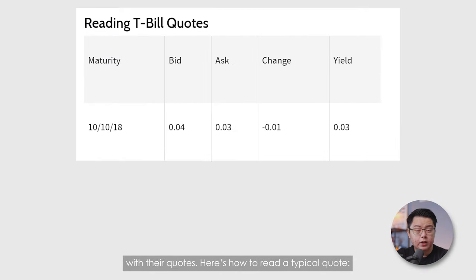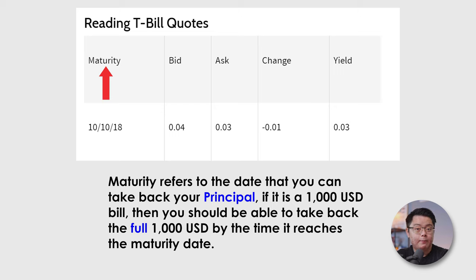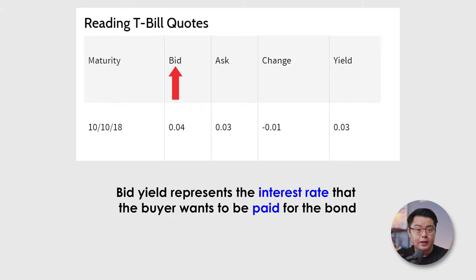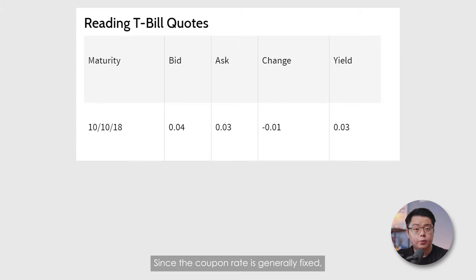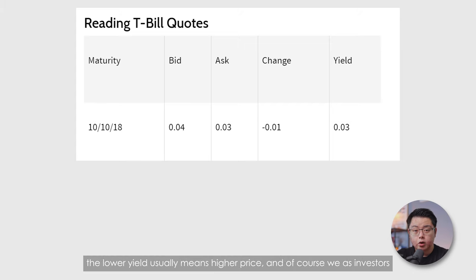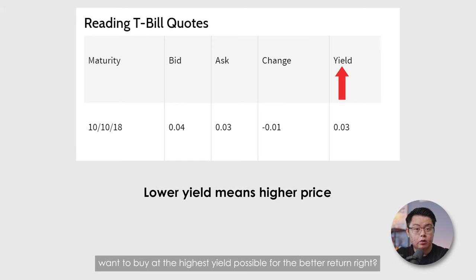Here's how to read a typical quote. Maturity refers to the date that you can take back your principal — if it's a $1,000 bill, you should be able to take back the full $1,000 by that date. The bid yield represents the interest rate the buyer wants to be paid for the bond. The ask yield represents the interest rate the seller is willing to sell you at. Since the coupon rate is generally fixed, a lower yield usually means a higher price. As investors, we want to buy at the highest yield possible for the better return.